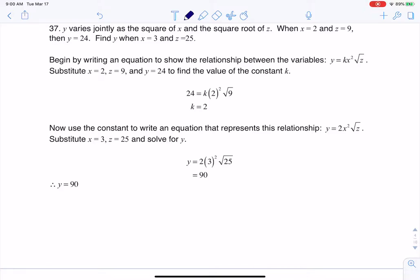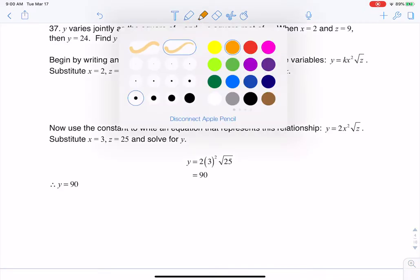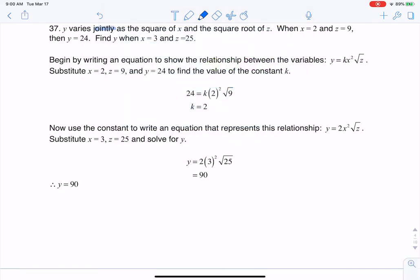So some buzzwords that we see going through here: I see 'y varies jointly'—that's going to be a big one—as the square of x and the square root of z. I'll piece that together in just a bit, but I got square of x versus square root of z, and here comes my ordered triple. I can see a complete set of information.